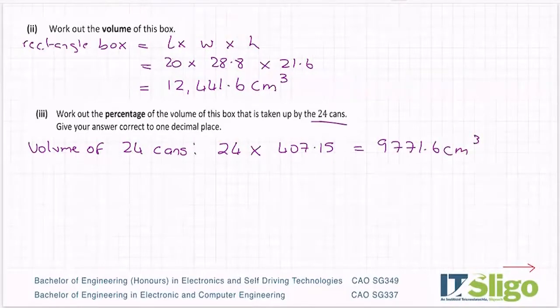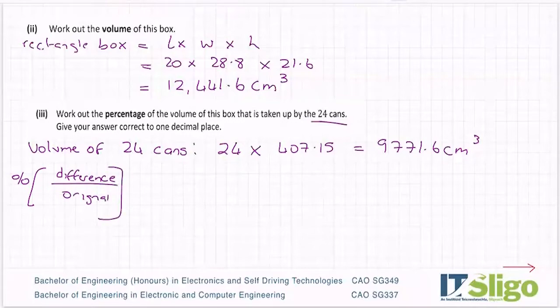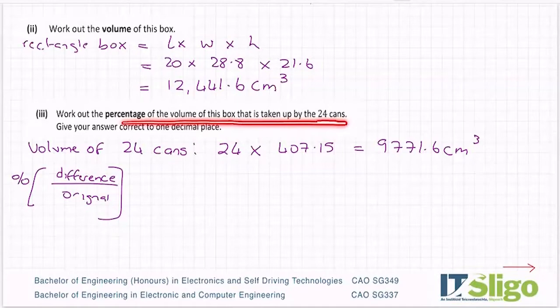So percentage. Now we've touched off percentage in a few different ways. And if you remember, I always have a kind of a general formula for percentage anything. So it's normally the difference over the original. So it's this general formula I have in my head when I'm asked for percentages. This could be profit, percentage profit. So the difference would be the difference between the cost price and the profit. It could be percentage loss, percentage anything. In this case, it's percentage of the volume of this box that's taken up by the 24 cans. Not the percentage of space, but the percentage of the volume of this box that's taken up by the cans. And I should have said multiply by 100, whichever you want there. So it's taken up by the cans.